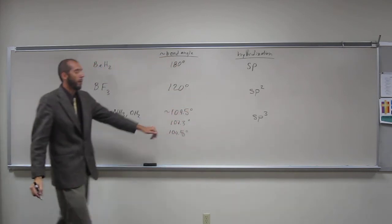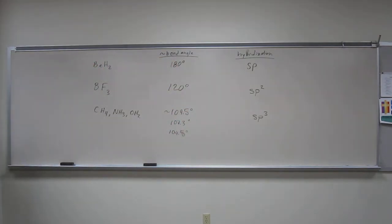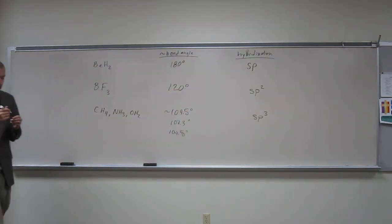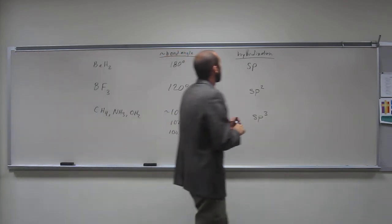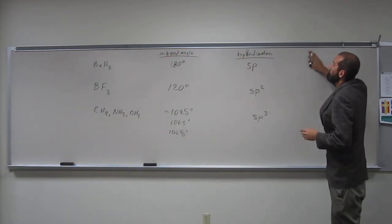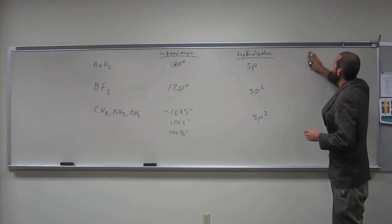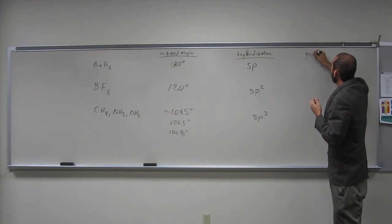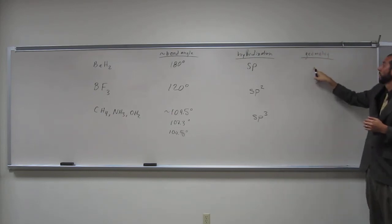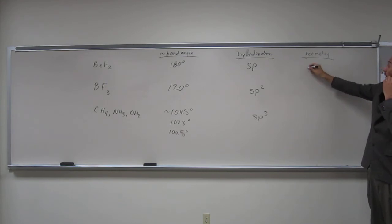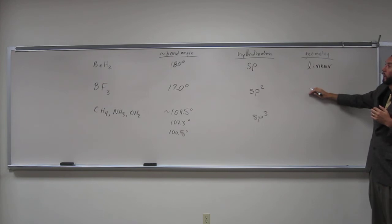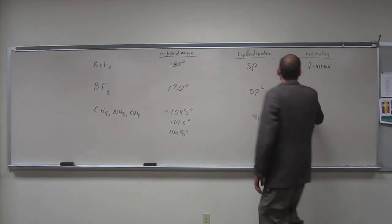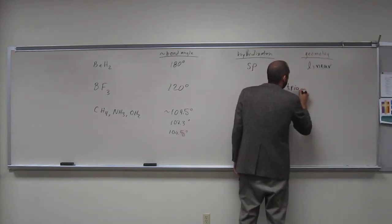So those are the common main group. And we can even do, well, so what's going to be the geometry around the central atom here? Planar. Planar. What about this one? Trigonal what? Planar. Planar.